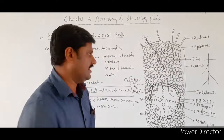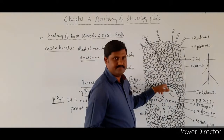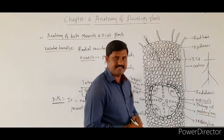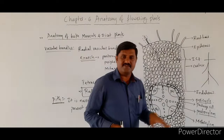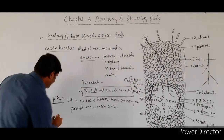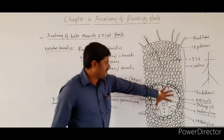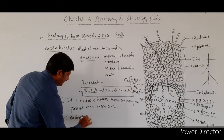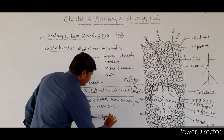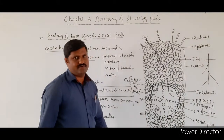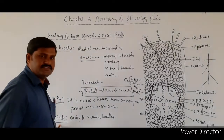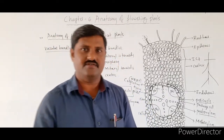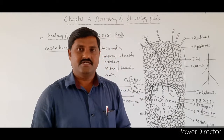One more important point from NCERT: the tissues lying inside the endodermis — pericycle, vascular bundles, and pith together form the stele, also called the stelelar region. The anatomy of dicot root is usually asked in the theory examination for 5 marks.